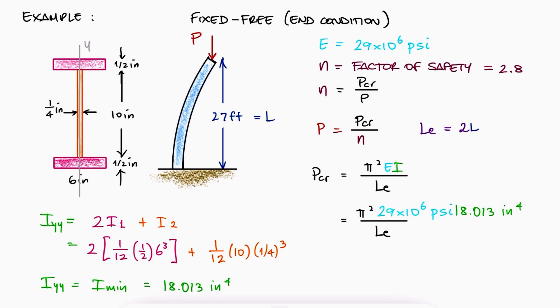With that minimum second moment of area, the given elastic modulus, and the effective length, we find the critical load P_cr and with it the centric load P.